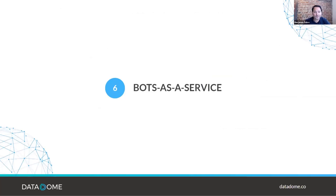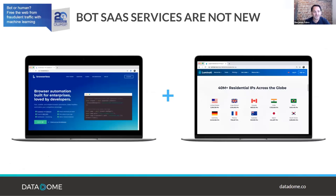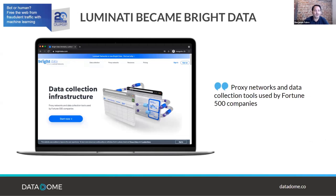The most concerning part is that this is no longer limited to advanced hackers. Today these capabilities are available as a service. Anyone can combine an advanced browser-as-a-service solution like Browserless with a residential IP proxy service like Luminati, and without any specific knowledge start creating a very advanced bot. Luminati even expanded from residential proxies to add scraping and browser capabilities, so any newcomer can run a massive attack for just a few dollars.